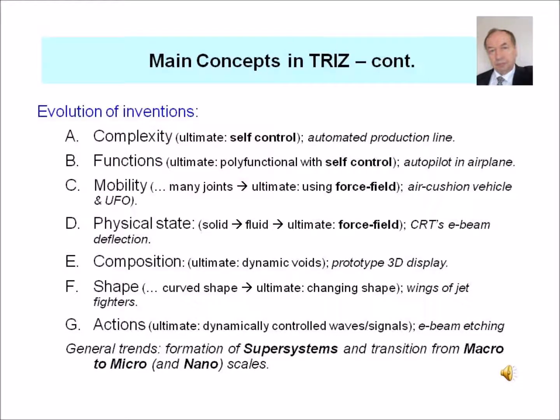The evolution of inventions is a very useful concept in TRIZ, and it leads inventors in the right direction. For example, complexity tends to increase up to self-control. Functions go into more and more functions and end up with self-control. Mobility goes from mechanical to using force fields. Physical state goes from solid to fluid to force field. Composition and shape become more and more dynamic, and actions are dynamically controlled, going towards the force field in advanced inventions.